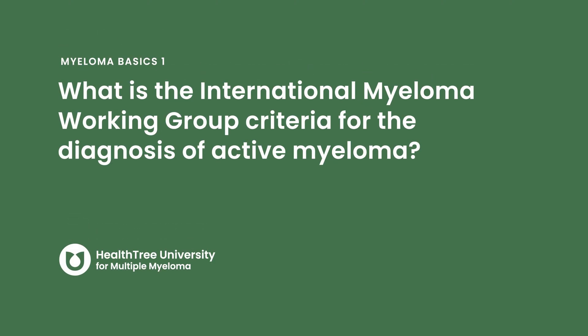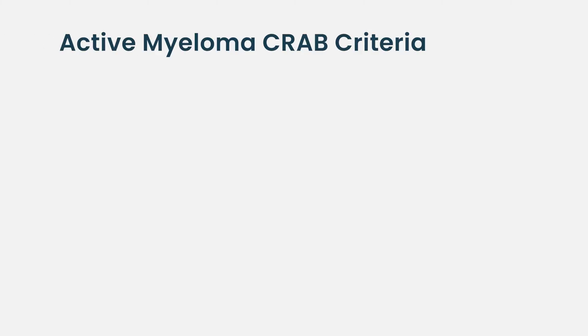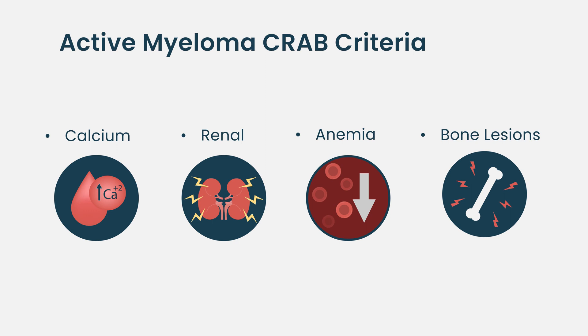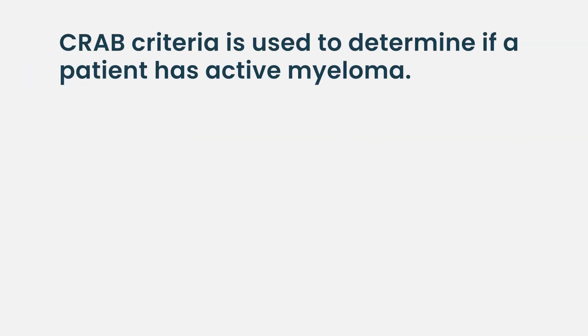What is the International Myeloma Working Group Criteria for the Diagnosis of Active Myeloma? To answer that question about myeloma-defining events, which at one time were also called CRAB symptoms — CRAB being the acronym used to define the four criteria that help us make the diagnosis of symptomatic myeloma, in other words, patients with multiple myeloma who we think would require clinical treatment.